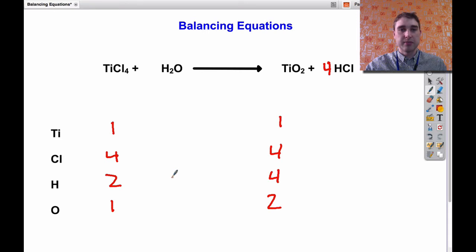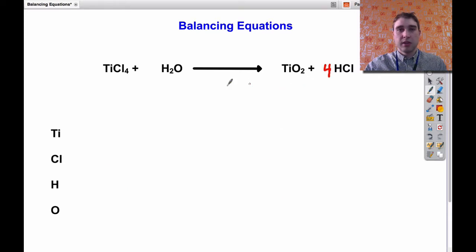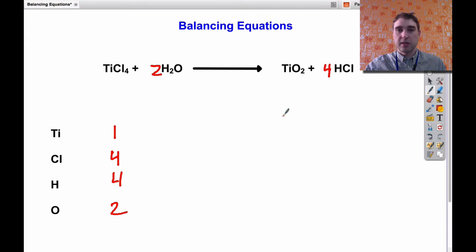On the left side we don't have enough hydrogens or oxygens. So I'm going to double the water — put a two in front of H₂O. Now let's do a count up. On the left: one titanium, four chlorines, two times two equals four hydrogens, and two oxygens. On the right: one titanium, two oxygens, four hydrogens, and four chlorines. Now we're balanced.